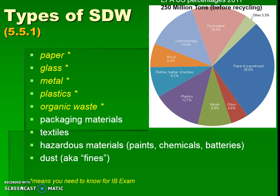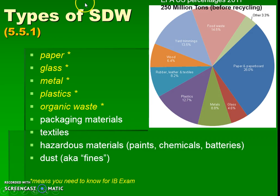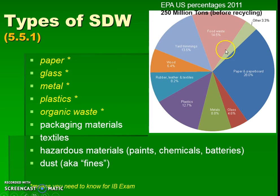Here are the different categories of solid domestic waste — this data is from the EPA from 2011, so you'll want something more up-to-date. The yellow categories are ones you definitely need to know for the IB exam. Paper, glass, metal, plastic, and organic waste are the major categories.